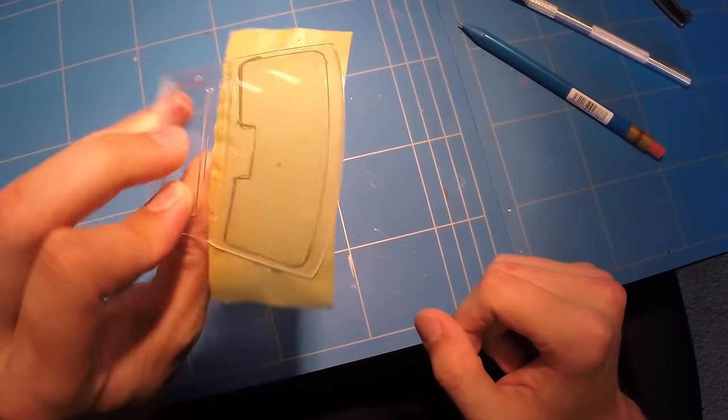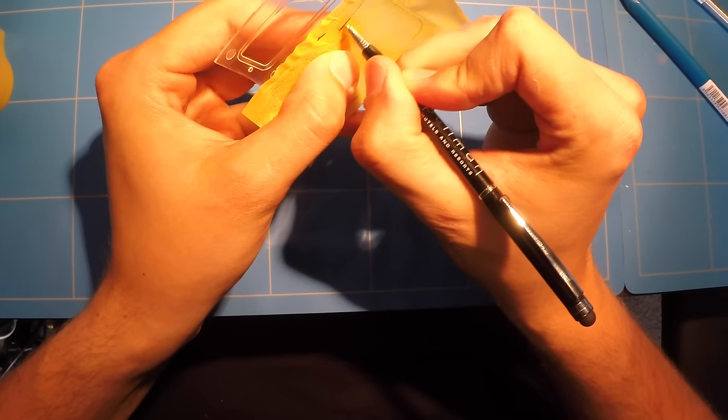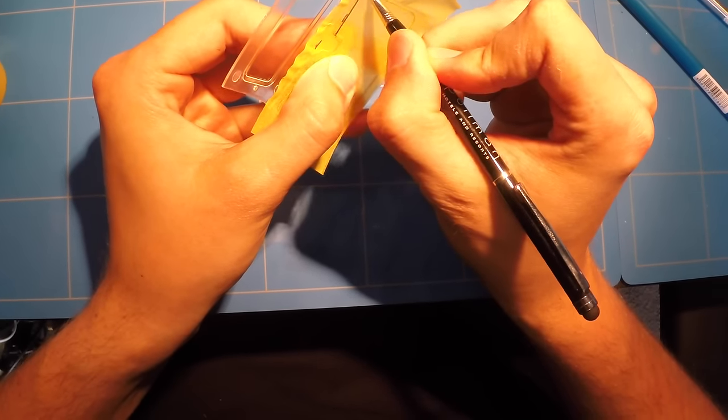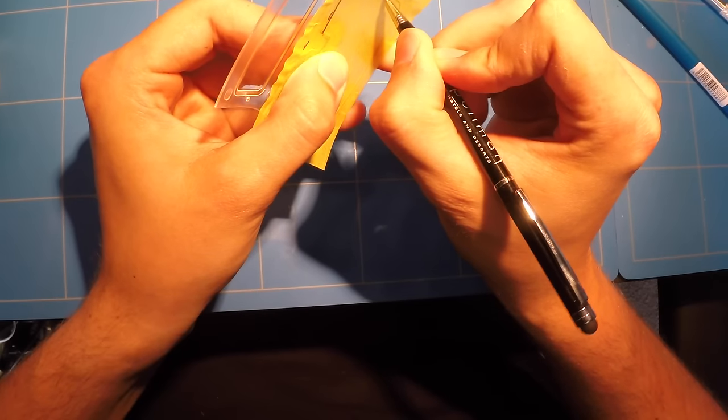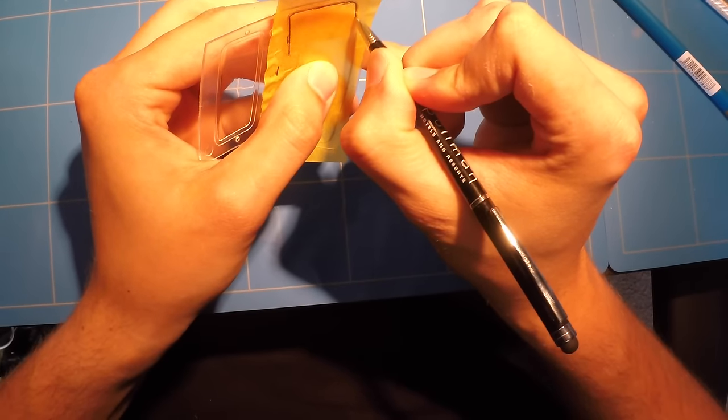Once the masking tape is on there you can still clearly see the line I put on there earlier, and you now know where to cut. But what you could also do is take out a pen and follow that line again but then on the masking tape so you have something extra that you can look at to follow with your knife later on.